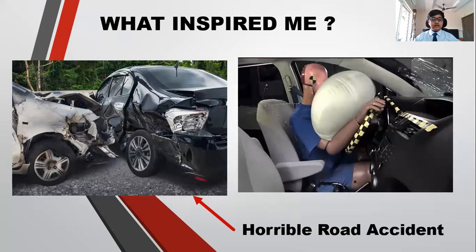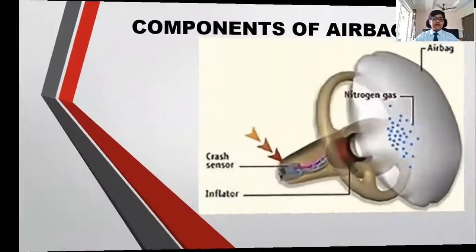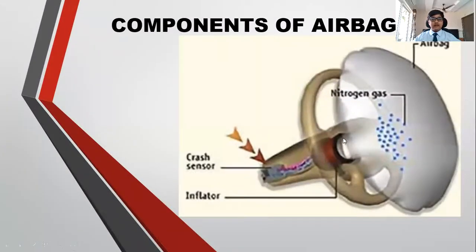Now I will tell you the components of an airbag. The components of an airbag are: a bag, crash sensors, and an inflator system. The bag is made up of nylon fabric.